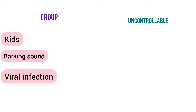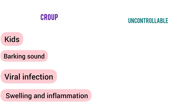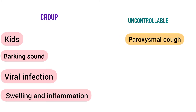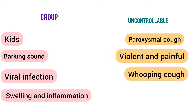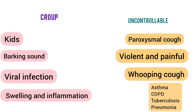Paroxysmal coughing refers to uncontrollable cough. It includes violent and painful coughing. Whooping cough falls under this category. Asthma, COPD, tuberculosis, and pneumonia can also cause paroxysmal coughing.